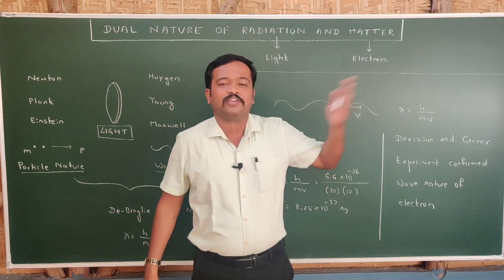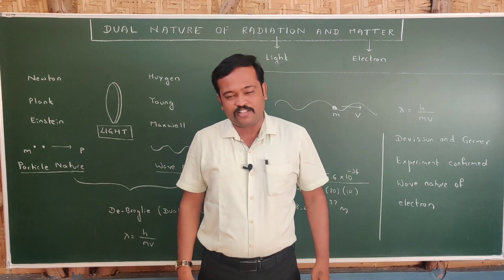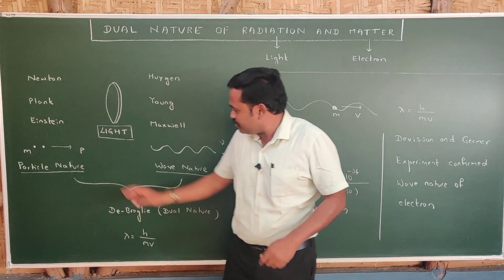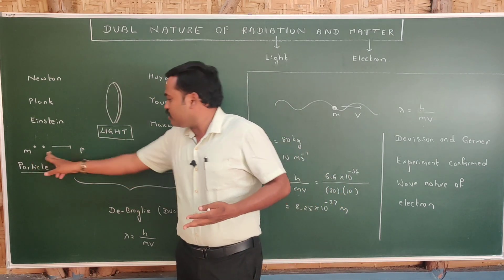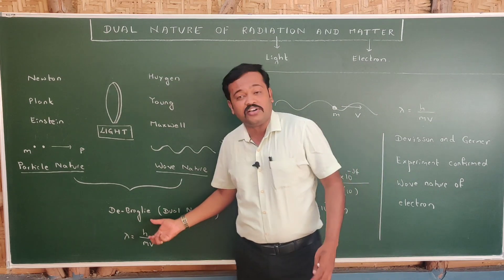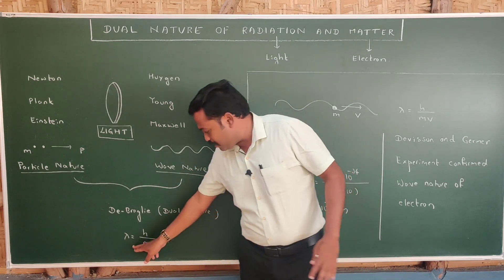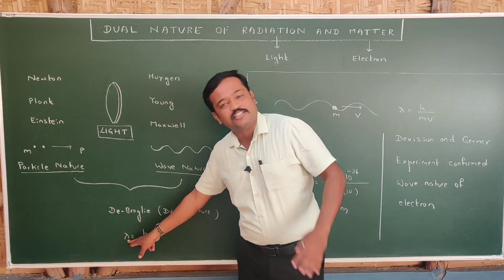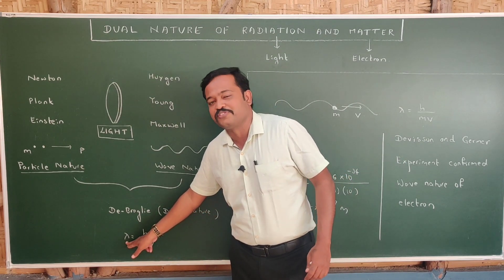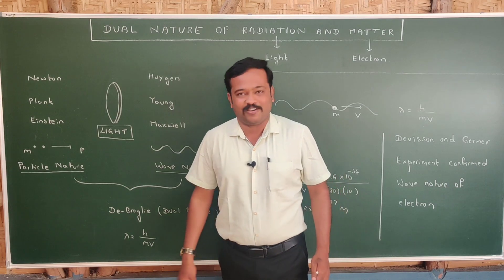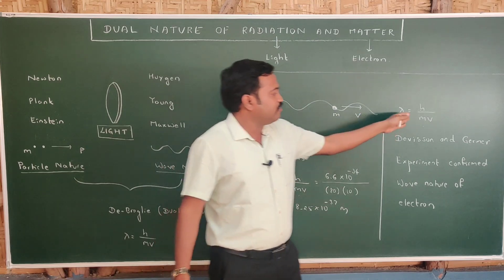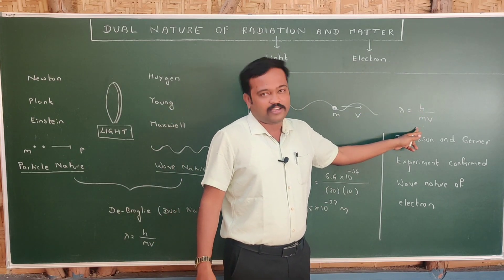When a particle is moving with a velocity, a wave is associated with it, and the wavelength of that wave is given by lambda equals h divided by mv. Mass and momentum are properties of a particle, while wavelength and frequency are properties of a wave. De Broglie came with the equation which has both properties: lambda equals h divided by mv. Lambda is a property of a wave; mass is a property of a particle. So the wavelength associated with a particle moving with velocity v is lambda equals h divided by mv.